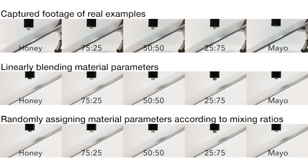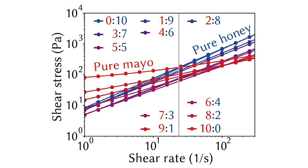This behaviour cannot be reproduced by linear blending approaches — that is, linearly blending the material parameters, or randomly assigning to each material point either the honey or mayo material. A remarkable property is that the stresses of the mixtures at various mixing ratios are smaller than those of the constituents at the grey line where the stresses of the constituents coincide.